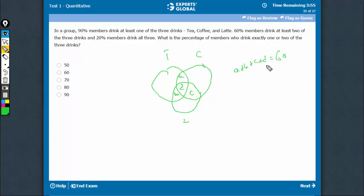20% drink all three, which means D is 20. So A plus B plus C is 40. This much is 40.